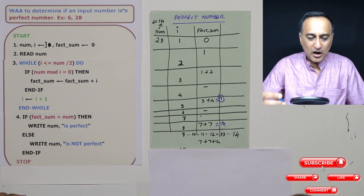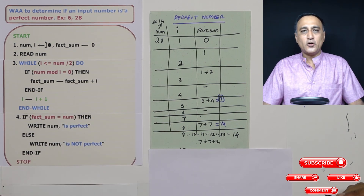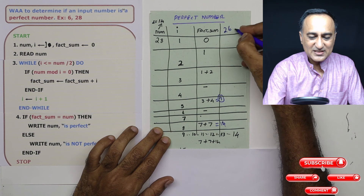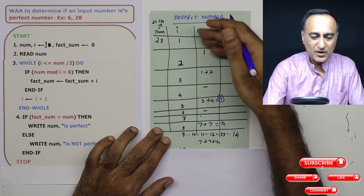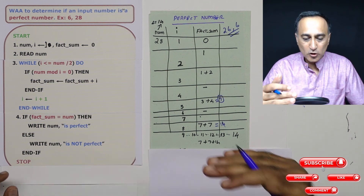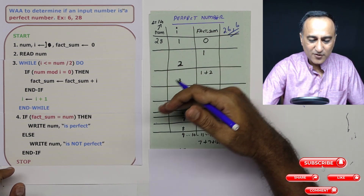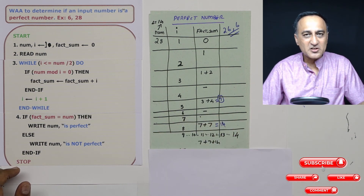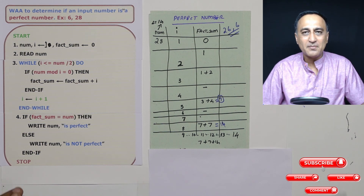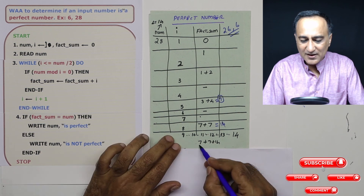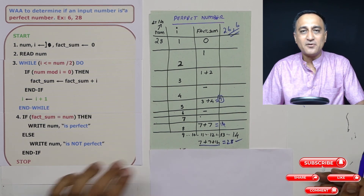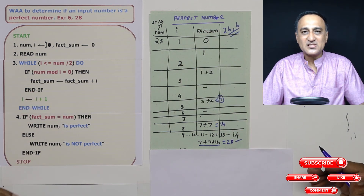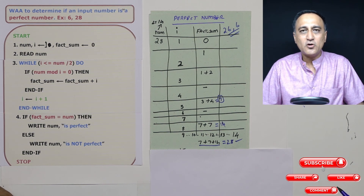This should give you a fair idea of how to find out if an input number is a perfect number or not. As a good exercise, try testing with numbers like 26 and 6, and see where this logic runs through. Draw the table and at every stage note how the variables change, because understanding how memory changes is the key to solving problems on your own.